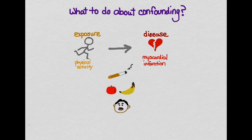Another confounding variable might be gender or sex, because male gender is associated with increased risk of MI — at least until a certain age in middle-aged people — and is also associated with higher levels of physical activity. Finally, income is another potential confounding variable: higher income is associated with lower MI risk and with higher physical activity. So here are four potential confounding variables for the relationship between physical activity and myocardial infarction.